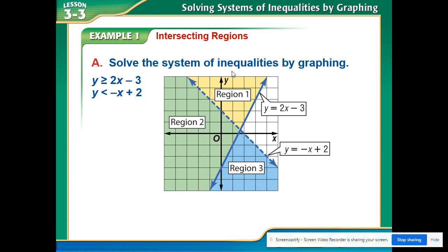This first one shades in all of this area, area one and two. And this one here shades in area two and three. Well where's the area that they overlap? That's area two. That is my solution. This is the solution because it's where both of them are true. This is the only section.